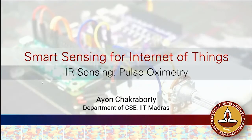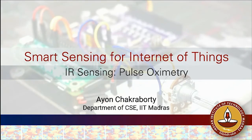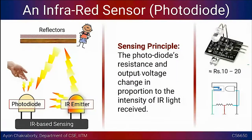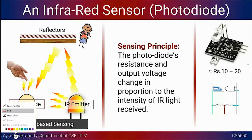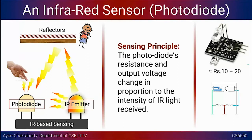We're going to look at more involved applications using IR sensing and look at pulse oximetry as a case study. Before going into pulse oximetry, I'll recapitulate some things we've already seen — in particular, what is an IR sensor or a photodiode. The resistance of the photodiode as well as the output voltage change in proportion to the intensity of the IR light received.